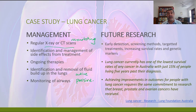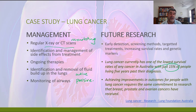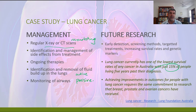Lung cancer currently has one of the lowest survival rates of any cancer in Australia — just 15% of patients live five years past their diagnosis. While we may be more aware of campaigns associated with breast cancer, prostate cancer, or ovarian cancers, there's a lot of competition for funding dollars in medicine, and lung cancer is another area where there's a real need for continuing research.